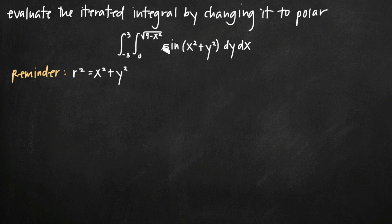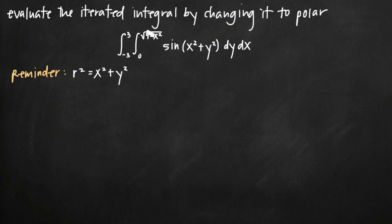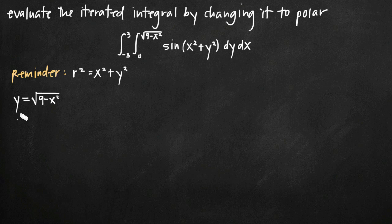There are a couple things we need to pay attention to: the function sine of x squared plus y squared needs to change to polar coordinates, we need to deal with dy dx, and we need to change our limits of integration on both integrals. Starting with the limits of integration, we're integrating first with respect to y, then with respect to x. The inner integral tells us y goes from 0 to square root of 9 minus x squared. Setting y equal to that and squaring both sides gives y squared equals 9 minus x squared, and adding x squared to both sides gives x squared plus y squared equals 9.